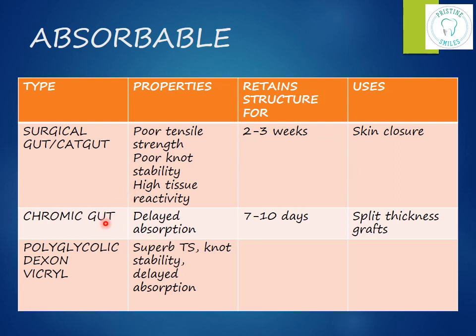Chromic gut is processed with chromic salts, which make it resistant to enzymatic degradation, resulting in a delayed absorption time. Its structure is retained for seven to ten days and it is used for split-thickness grafts. Both chromic and plain gut are packaged in a moist state to preserve suturing properties — if they dry out they become brittle. Open gut sutures only when ready for suturing; do not soak them in solution as chromic salts will leach out, accelerating tissue resorption.